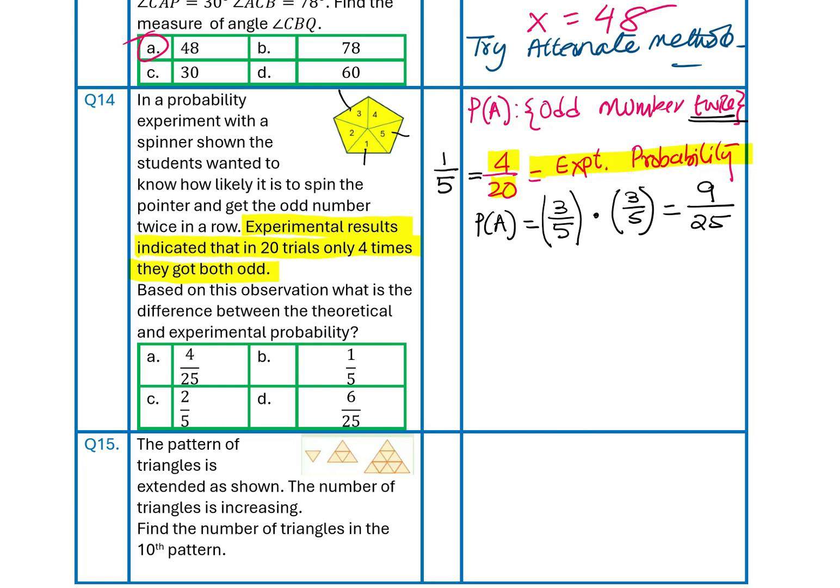Now, we need the difference. So, difference is 9 by 25 minus 1 by 5. So, we can make a common denominator of 25. We get 9 minus 5 times 5 is 25. So, we get answer 4 over 25 as the difference between the two, which is again option A for this particular case. Does it make sense to you?